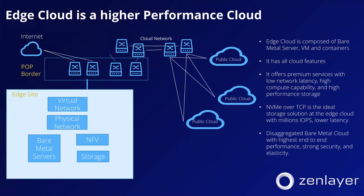So we can describe exactly what edge cloud can do. Besides general computing services like VMs, at the edge cloud we also deliver bare metal and container services. Because it's this type of cloud, it has all the cloud features. Beyond that, we also believe edge cloud is a premium cloud service — it enables fast, lower latency network service, higher density computing capacity, and higher performance storage as well. That's why we believe NVMe over TCP provides the ideal fit for the edge cloud.